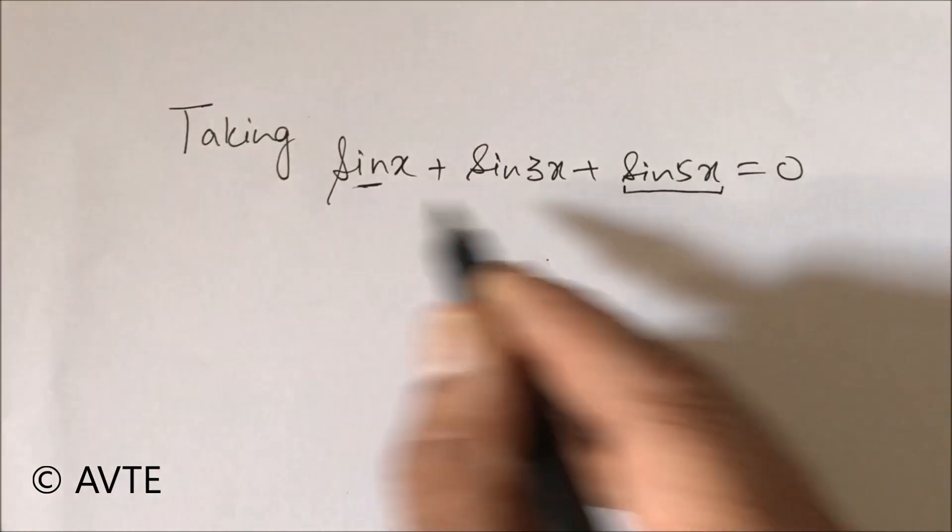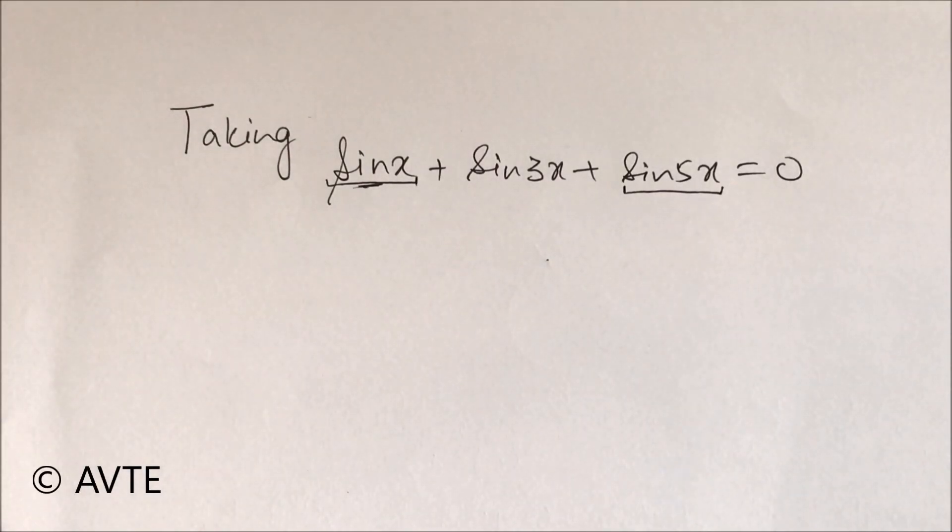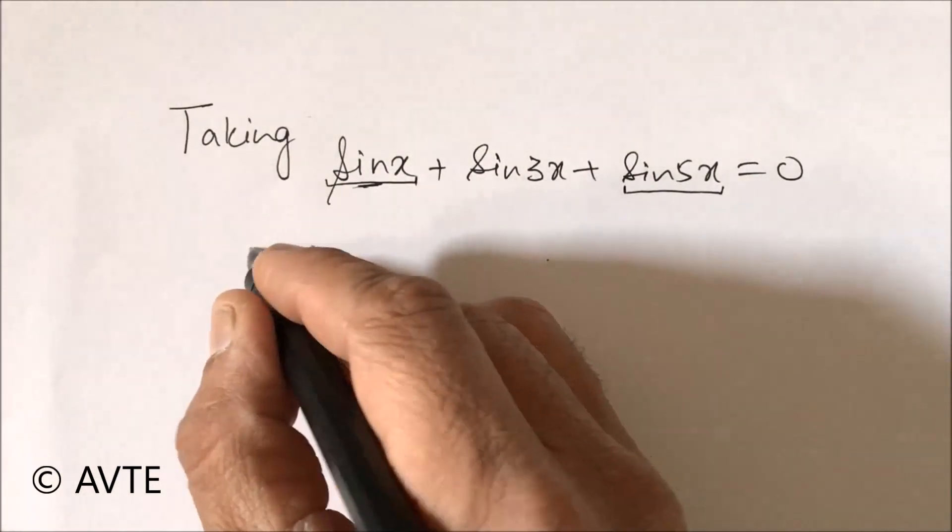Just see we can group sin 5x with sin x so that when we apply sum to product we will be able to get sin 3x common. So grouping sin 5x plus sin x plus sin 3x.